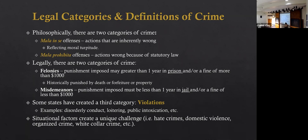Mala in se offenses are actions that are inherently wrong — wrong in and of themselves; they reflect moral turpitude. We're talking serious crimes: murder, rape, robbery. These are things we as society have said violate basic morality. Mala prohibita offenses are not necessarily morally wrong but are wrong because of a statute — wrong because the law says so.